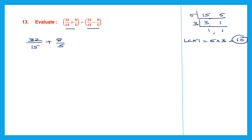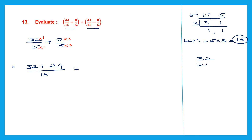The LCM is 15, which we use as the common denominator. So: 15 into 1 is 15, giving 32 into 1 is 32; plus 5 into what is 15? 5 into 3 is 15, so we multiply 8 into 3 — 8 threes are 24. Now we add: 32 plus 24. 4 plus 2 is 6, 3 plus 2 is 5. So we get 56 by 15.